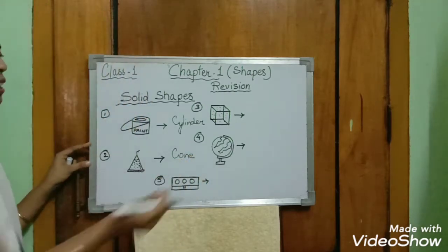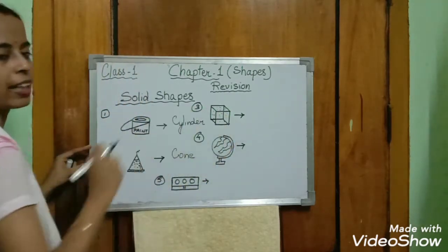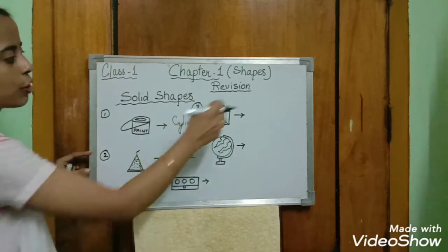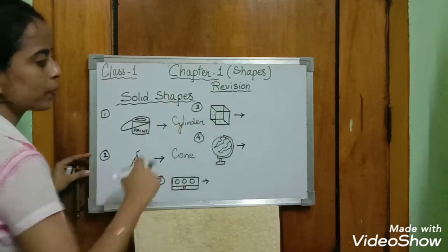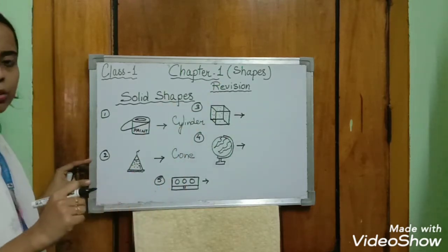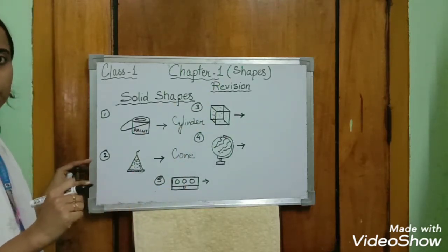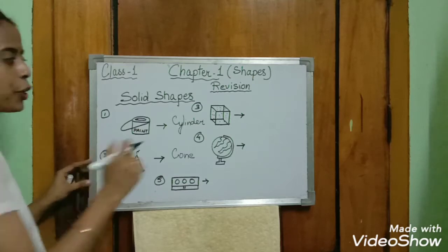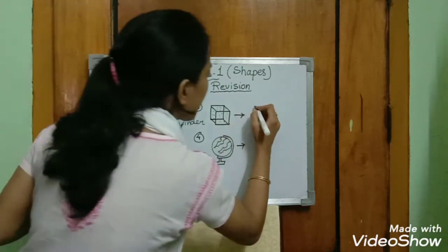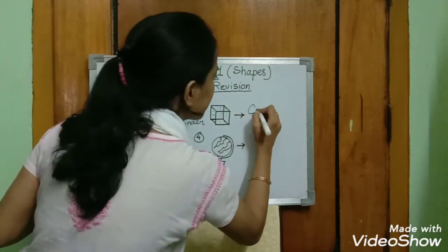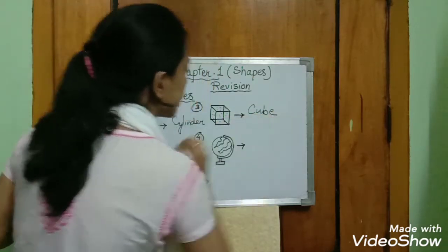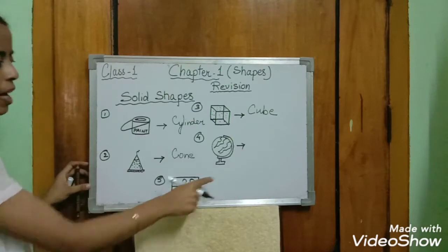Next, the third object — this is a dice, a ludo dice. Look at the shape. It is similar to which solid shape? It is a cube. The ludo dice is shaped like a cube.